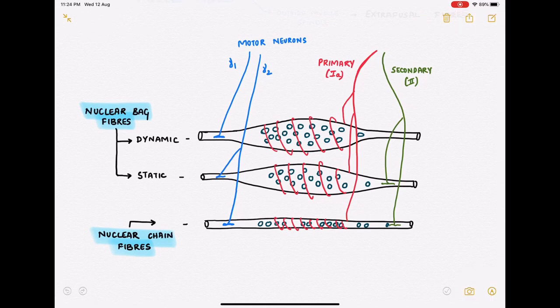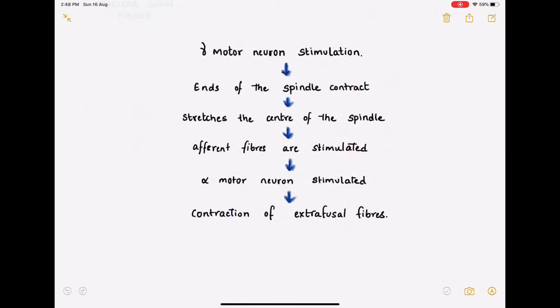When the intrafusal fibers contract as a consequence of the gamma motor neuron stimulation, there is no significant change in the length of the muscle as the intrafusal fibers are neither in sufficient number nor do they have enough contractile power. So when gamma motor neurons are stimulated, this would lead to the contraction of the ends of the spindle which exerts a stretch on the center of the spindle.